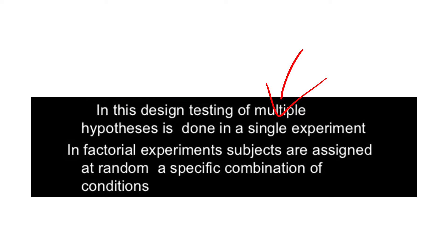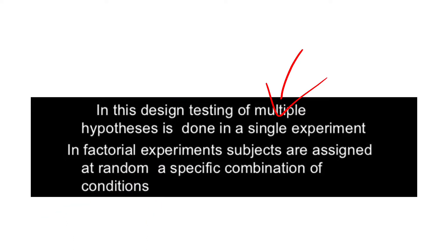In factorial experiments, subjects are assigned randomly. Whenever it is an experimental design, we have to follow three things: one is random assignment of subjects, next is manipulation or treatment, and next is you should have a control group. In factorial experiments also, subjects are randomly assigned to specific combinations of conditions in different groups.